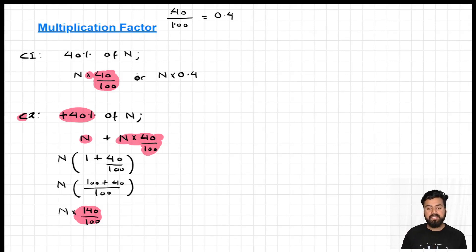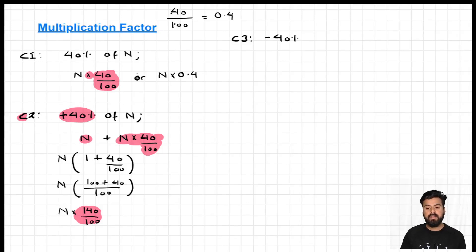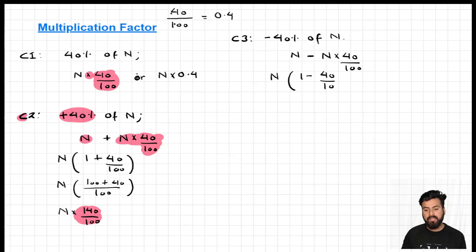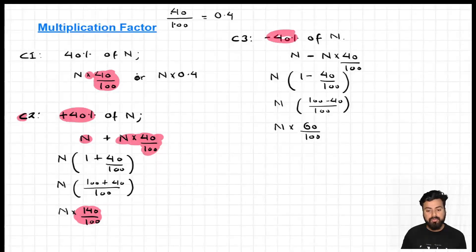In Case 3, let's reduce the same number by 40 percent. Since we are reducing, we subtract — N minus N times 40 by 100. Taking N outside gives N times (1 minus 40 by 100). Taking 100 as LCM: 100 minus 40 by 100 equals 60 by 100. So the multiplication factor when reducing a number by 40 percent is 60 by 100.